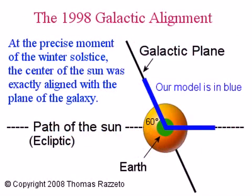As a matter of fact, this event has already happened. At the precise moment of the winter solstice in 1998, the center of the Sun was exactly aligned with the plane of the galaxy.